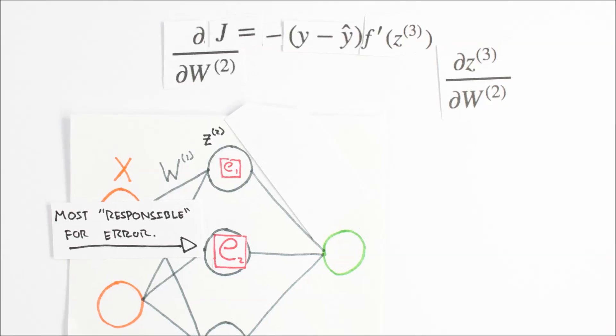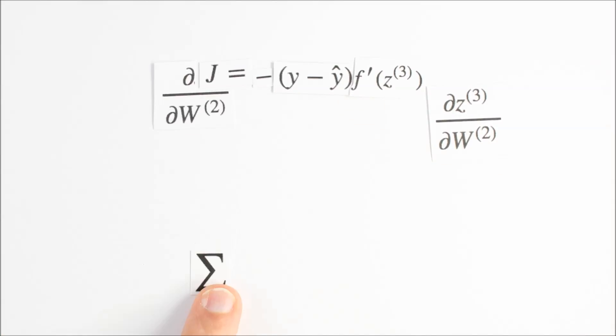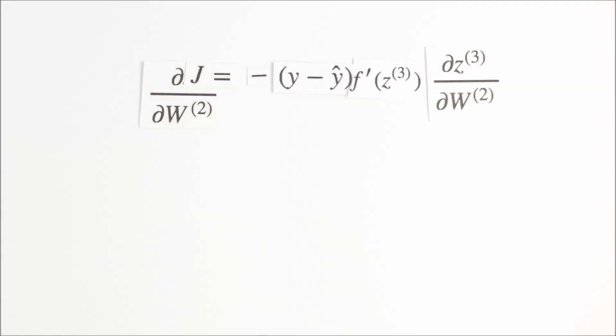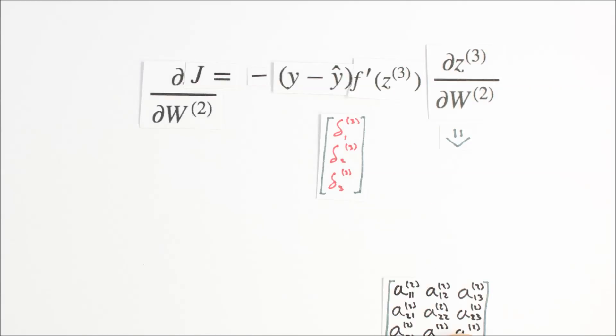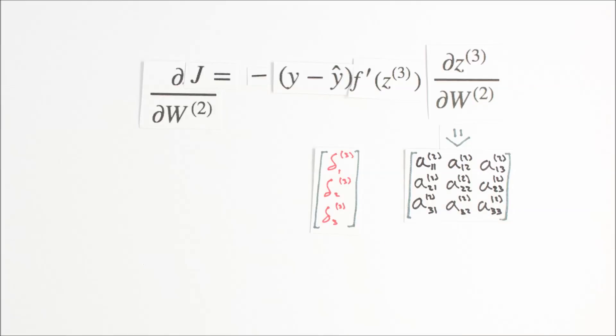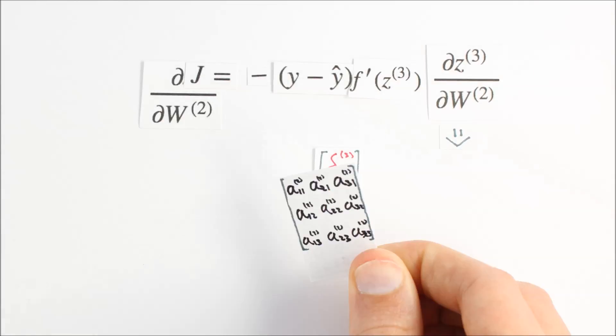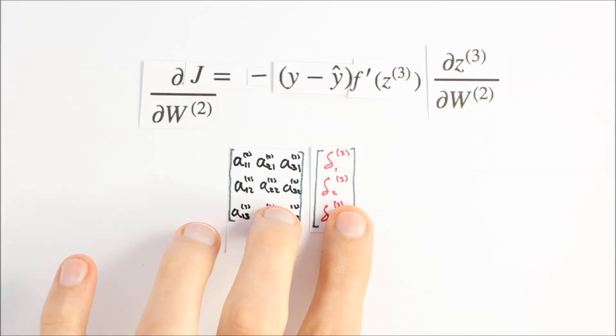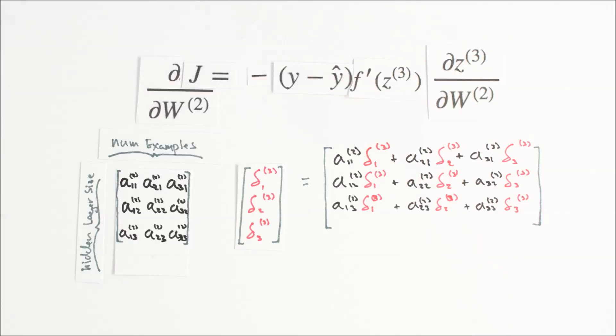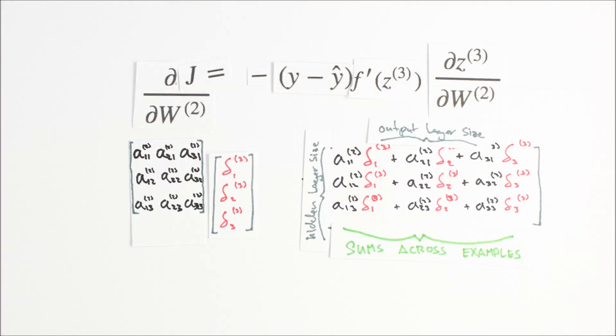We need to be careful with our dimensionality here. And if we're clever, we can take care of that summation we got rid of earlier. The first part of our equation, y-y-hat, is of the same dimension as our output data, 3x1. f prime is of the same size, and our first operation is a scalar multiplication. Our resulting 3x1 matrix is referred to as the back-propagating error delta3. We determined that dz3dw2 is equal to the activity of each synapse. Each value in delta3 needs to be multiplied by each activity. We can achieve this by transposing A2 and matrix multiplying by delta3. What's cool here is that the matrix multiplication also takes care of our earlier omission. It adds up the djdw2 terms across all our examples.